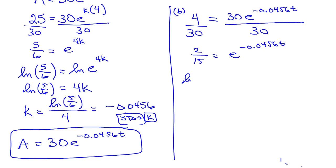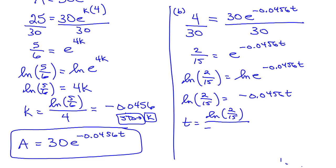Take the natural log of both sides. So you get the natural log of 2 over 15 is equal to negative 0.0456t. Divide both sides by that value of k. Now when you put this in the calculator, use the stored value of k. Don't use the decimal. You get more accurate answers that way. And you get 44.205 hours.